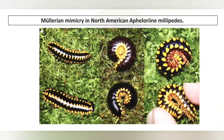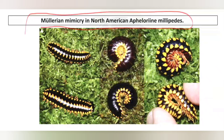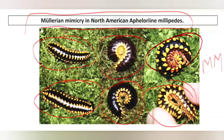Another important example is Mullerian mimicry in North American Millipedes — Apheloriine Millipedes. They also show Mullerian mimicry by appearing similar to each other.